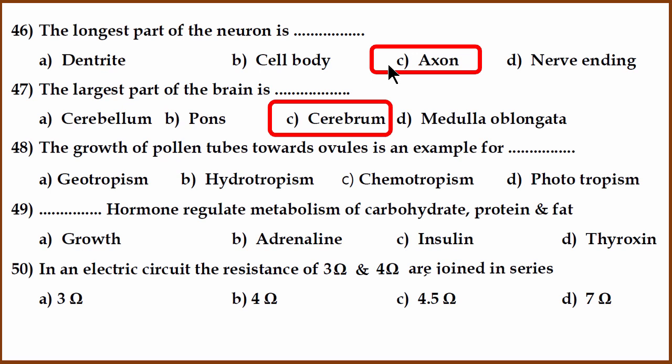48th question. The growth of pollen tubes towards ovules is an example for what? Geotropism is towards gravity or opposite gravity. Hydrotropism is towards water or away from water. Chemotropism is chemical induced whereas phototropism is towards light or away from the light. So this is a chemotropism example.